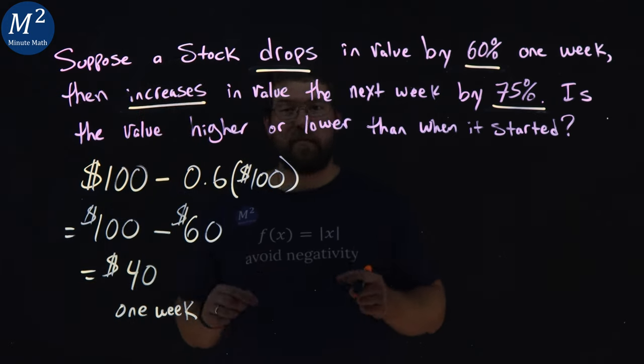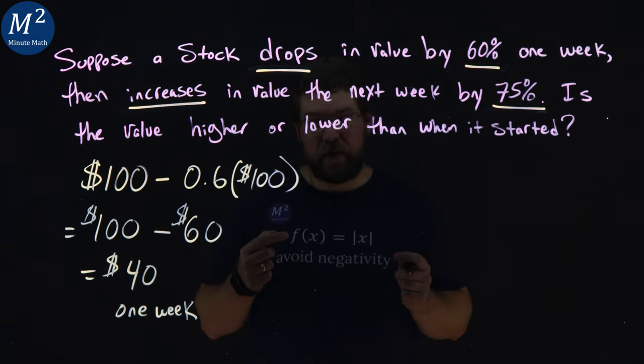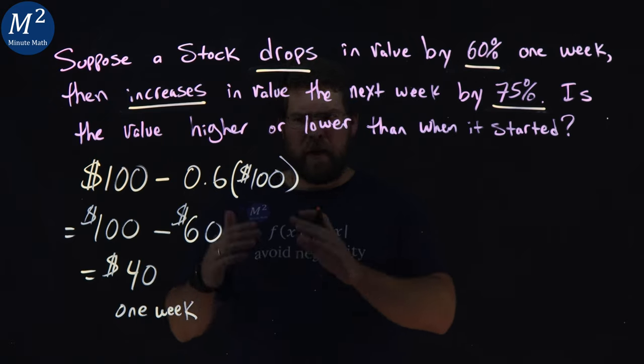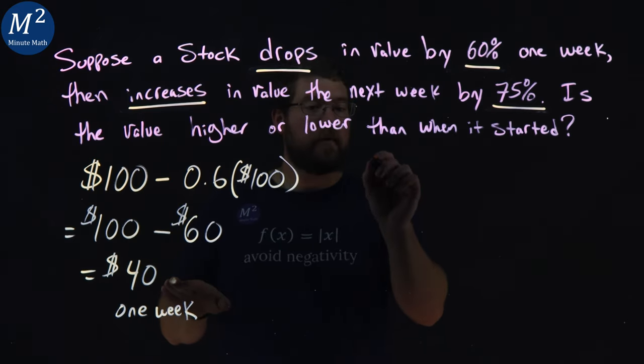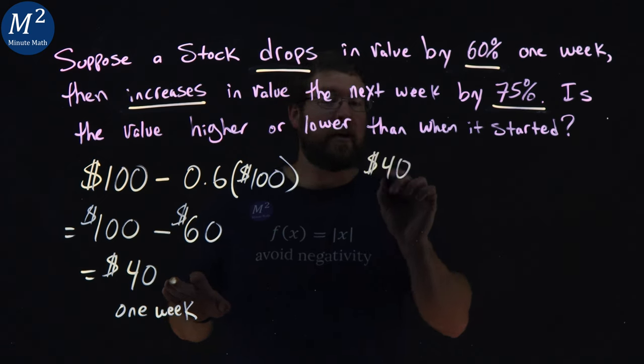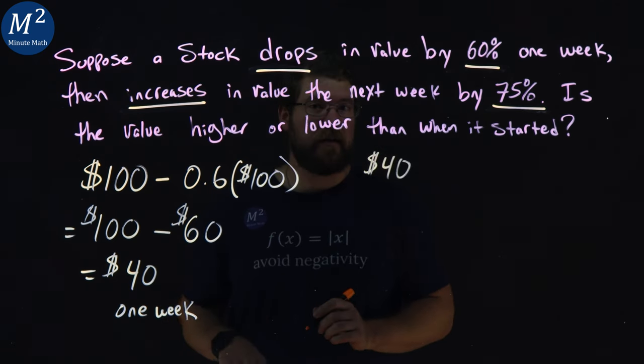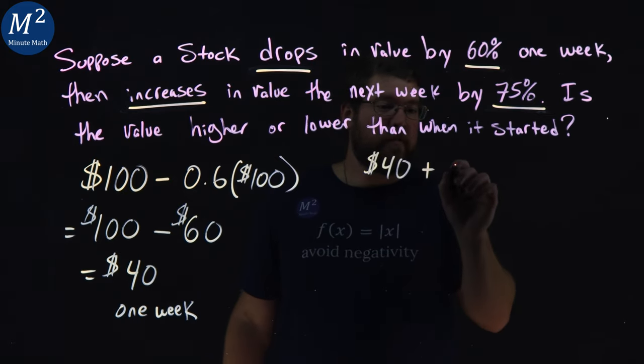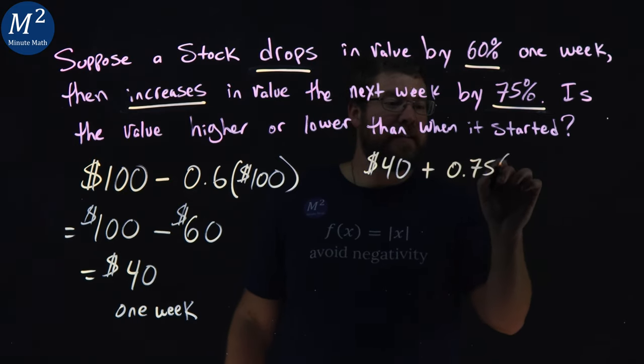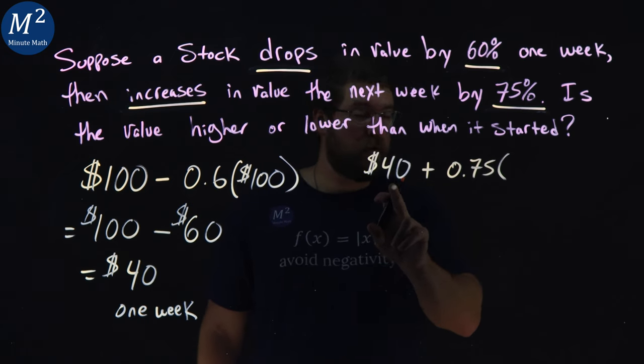Then after that, it increases by 75%. So we start now. Imagine, kind of ignore everything we did in the past. We have a stock that's $40. And if it increases by 75%, we take that $40 and add the 75% as a decimal, 0.75 times this amount, $40.